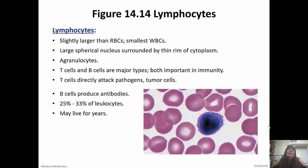Lymphocytes are the smallest of the white blood cells, slightly larger than red blood cells. They have a large spherical nucleus that takes up most of the cell, surrounded by a very thin rim of cytoplasm. T cells and B cells are the major types, both important in immunity. T cells directly attack pathogens and tumor cells; B cells produce antibodies. Twenty-five to thirty-three percent of leukocytes are lymphocytes, and these can live for years.